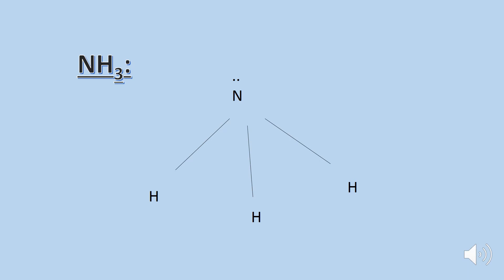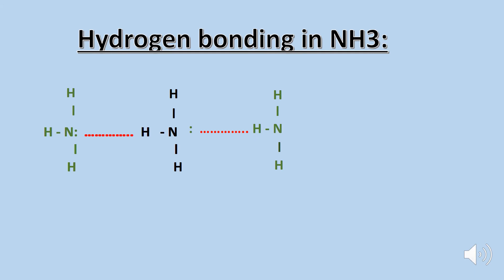Another example of hydrogen bonding is ammonia. In the Lewis structure of ammonia, nitrogen is covalently bonded with hydrogen, so it can easily form hydrogen bonds. As you can see in the diagram, the central ammonia molecule is making hydrogen bonds with two other ammonia molecules. The red dotted line denotes the hydrogen bonding in ammonia.